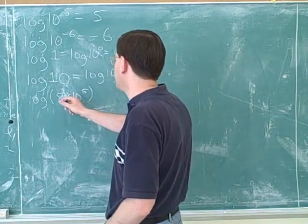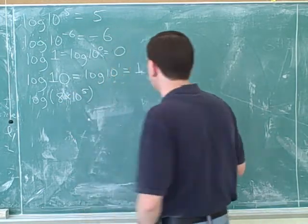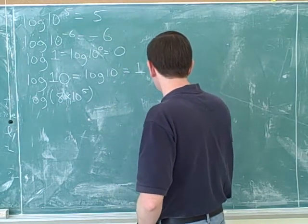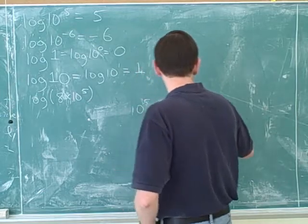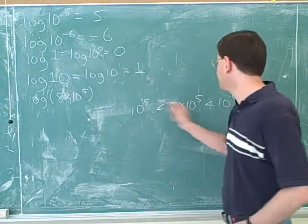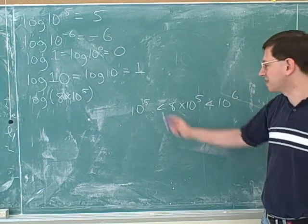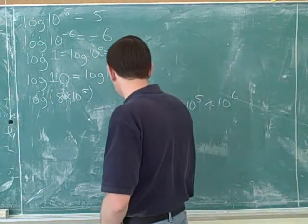Well, let's start by comparing, just focusing on the number on the inside. So we can say that number on the inside over there, 8 times 10 to the fifth. Well, we know that's really between 10 to the fifth and 10 to the sixth. So we could say this is between 10 to the fifth and 10 to the sixth. These are like our references. And now we can take the log of everything.